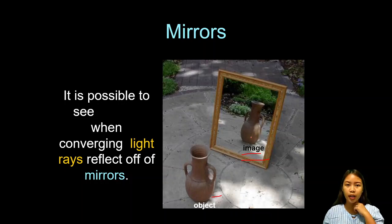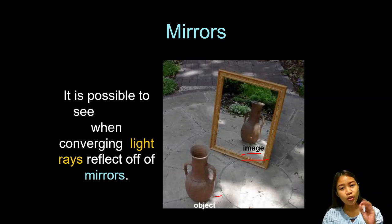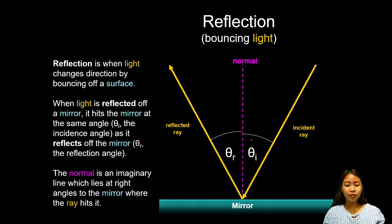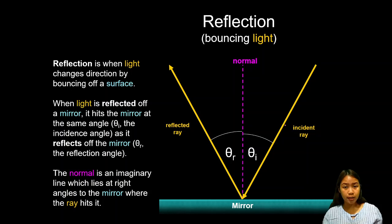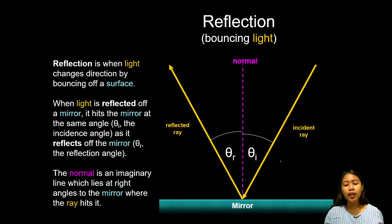The image is not a picture — it's an image like what you see of yourself in the mirror. For the reflection of light, we have the incident ray, which comes from the source of light and hits the mirror, then bounces back as the reflected ray. The angle between the incident ray and the normal line is the angle of incidence, and the angle between the reflected ray and the normal line is the angle of reflection.